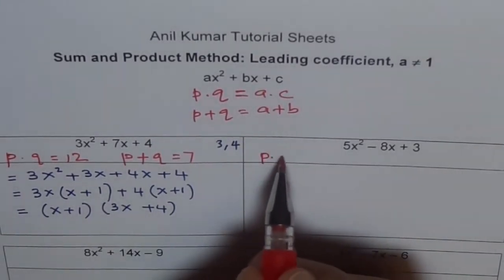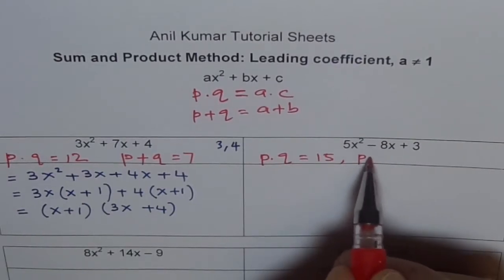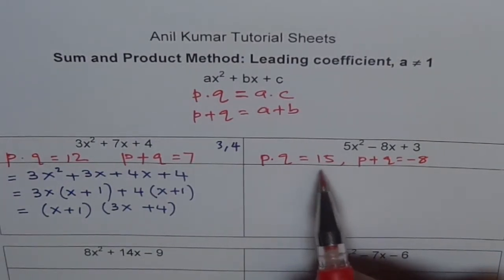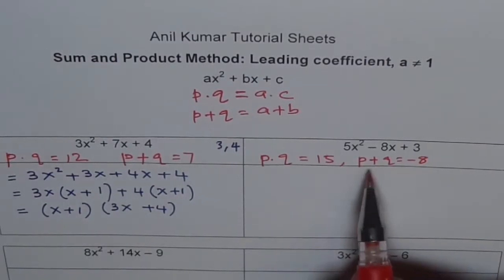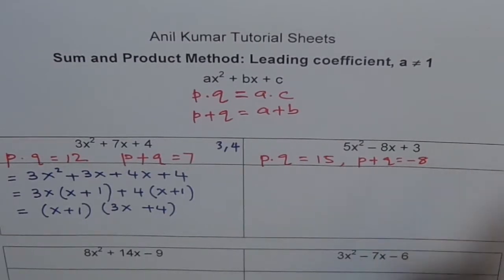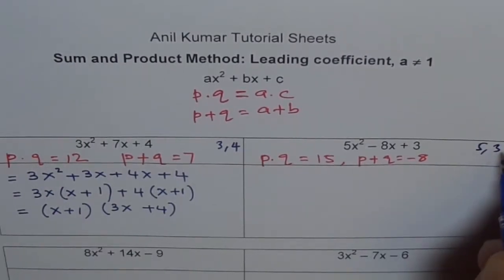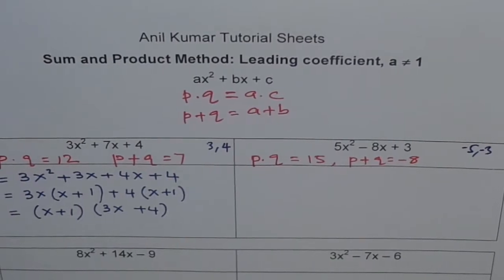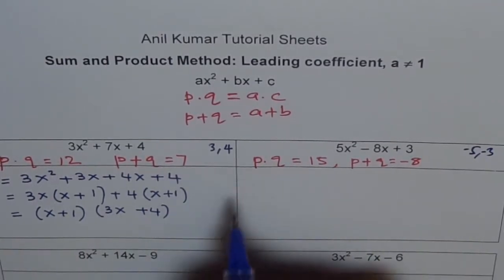For the next one, the product of two numbers should be 5 times 3, which is 15. And their sum should be minus 8, so p plus q equals minus 8. You have a product which is positive and a sum which is negative. That means both numbers are of the same sign — and because the sum is negative, both numbers are negative. The two numbers that work are negative 5 and negative 3: negative 5 times negative 3 gives plus 15, and negative 5 plus negative 3 gives minus 8.